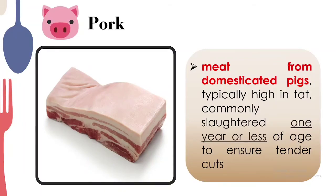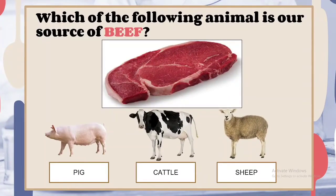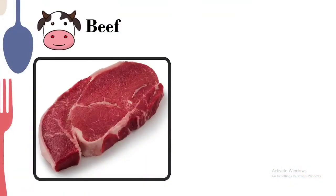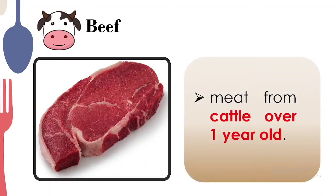Which of the following animals is our source of beef — is it pig, cattle, or sheep? Beef is meat from cattle over one year old. Its appearance is bright red in color. It is tougher meat due to its muscle build, because the animal is more matured — over one year old. That is why the meat is tougher compared to other kinds of meat.